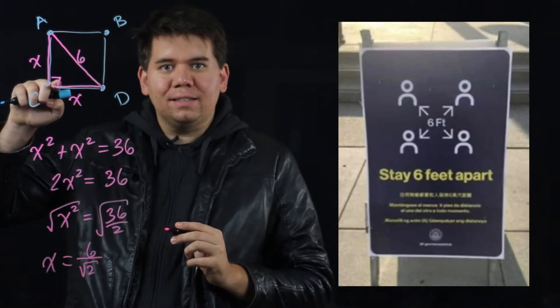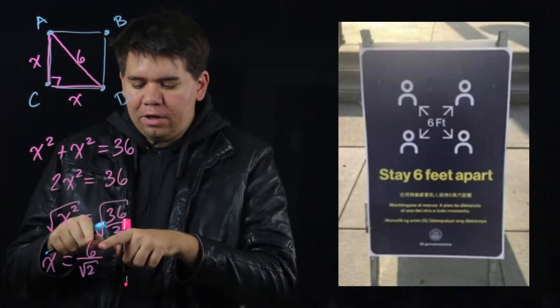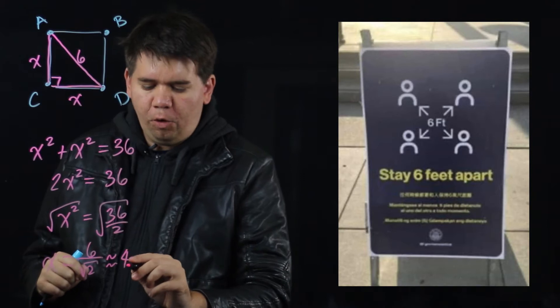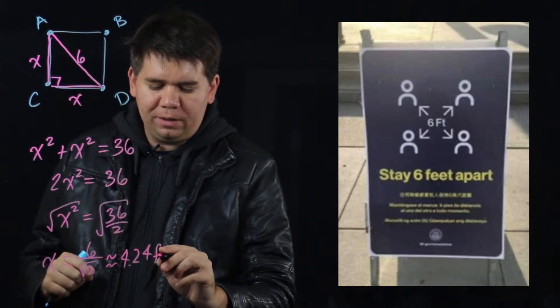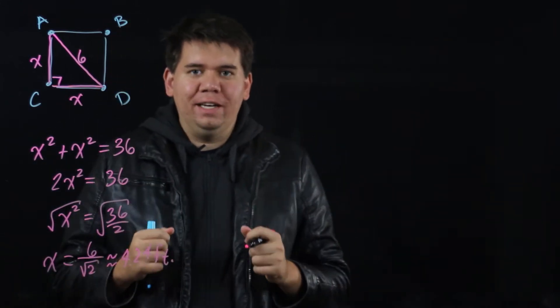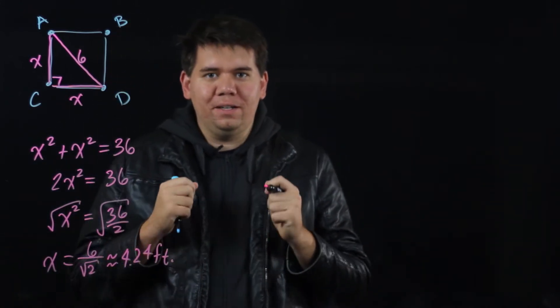A and C are not 6 feet away from each other, they're only 6 feet divided by the square root of 2, which is about 4.24 feet away from each other. It turns out that a little bit of geometry can help us social distance even better.